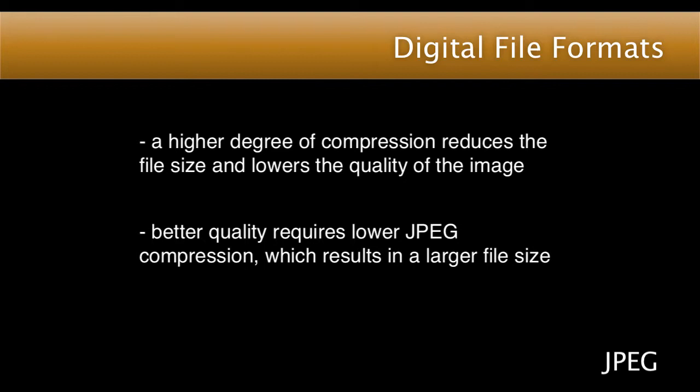The degree of compression affects how many shots can be taken before your memory card is full. Better quality requires lower JPEG compression, which results in larger file sizes. Larger files take up more space on your memory card, transfer more slowly to your computer, take up more hard drive space, and are processed more slowly by your photo editing software. Higher compression will reduce file size, transfer time, storage space, and software processing time.